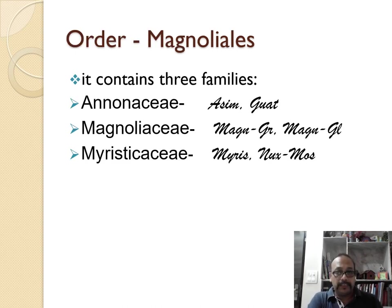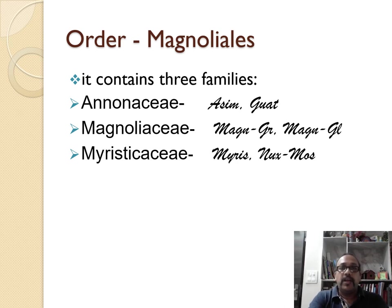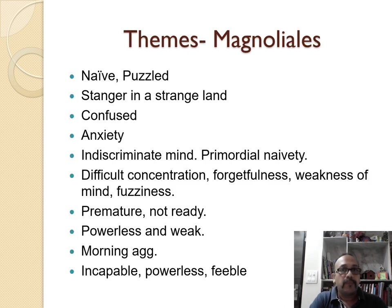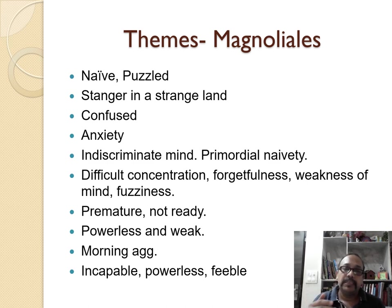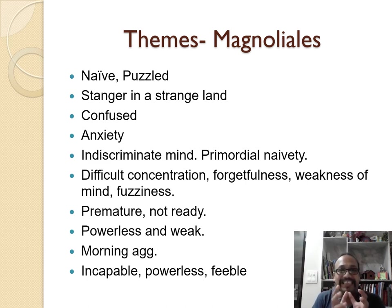Within the whole subclass, the first order is Magnoliales. It contains three families with well-proved medicines: Annonaceae, which includes Asimina; Magnoliaceae, which includes Magnolia grandiflora and Magnolia glauca; and Myristicaceae, which includes Myristica sabifera and Nux moschata. The theme of the Magnolia family is that they are very naive, very primitive — like in the womb. Comparing with minerals, they are at the hydrogen stage. They have not yet formed; they are connected with the divine power.